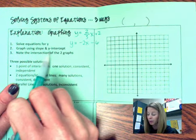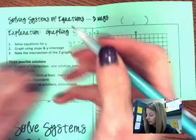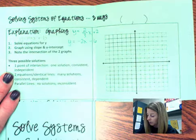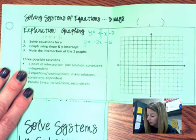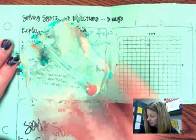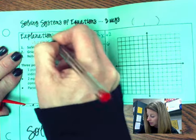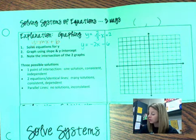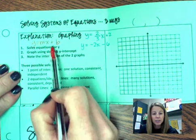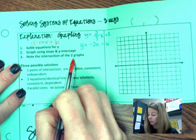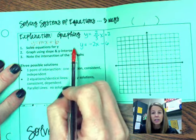Step two, graph using slope and y-intercept. I'm going to write over here, y equals mx plus b. So you are trying to graph the equations, and then step three, note the intersection of the two graphs. These two lines should intersect if there is a single solution. So let's go ahead and do that.